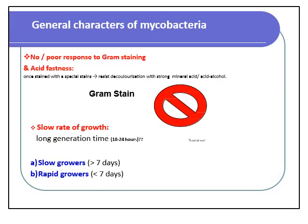General characters of mycobacteria: they show no or poor response to gram stain, so they require special stains such as the Ziehl-Neelsen stain. The cause of acid fastness is due to the high lipid content present in the bacterial cell wall, which resists the decolorizing effect of strong mineral acids.